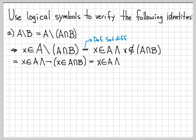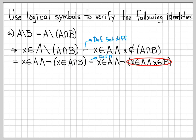Let's keep going: X is in A and NOT... What does it mean for X to be in A intersect B? That means X is in A and X is in B. To do this simplification, we've just used the definition of set intersection — that's exactly what it means for X to be in an intersection: it's in both of the sets. I've replaced my intersection symbol with different logical symbols that mean the exact same thing.